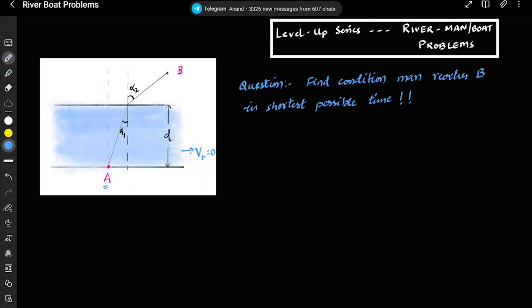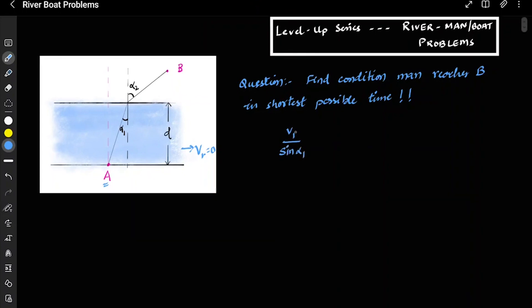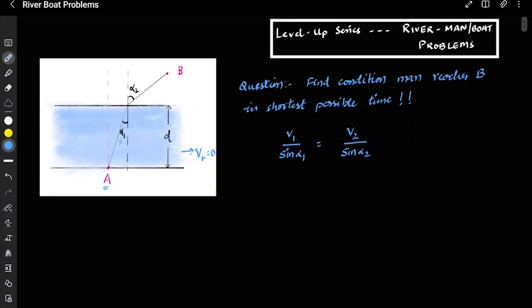Just try to imagine what happens to light. Have you studied Snell's law? If you have studied Snell's law, you will find the answer in the easiest way because you know the result. Snell's law says that v1 upon sin alpha 1, velocity of light in one medium upon sin alpha 1, which is this alpha, is equal to v2 by sin alpha 2.